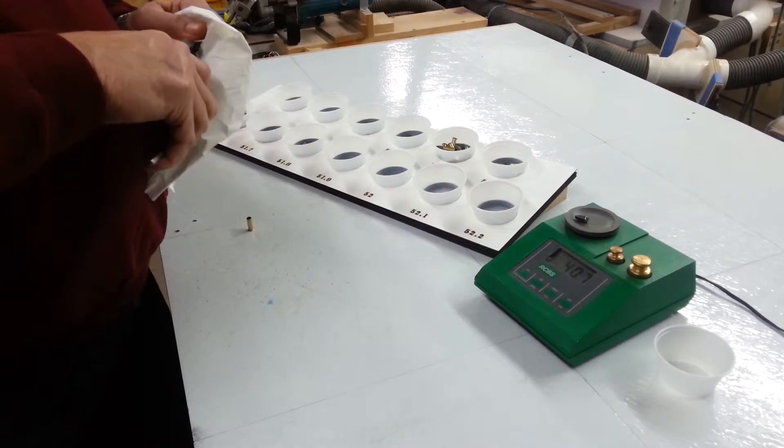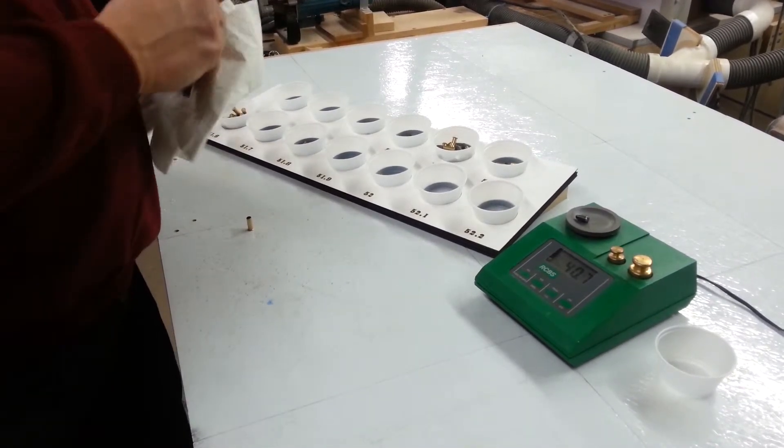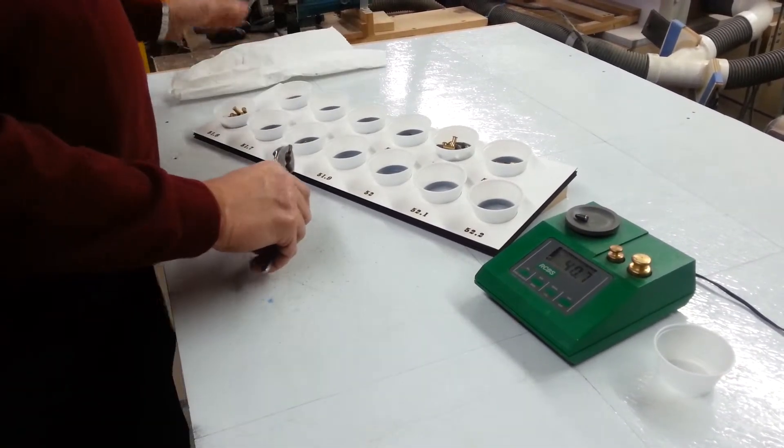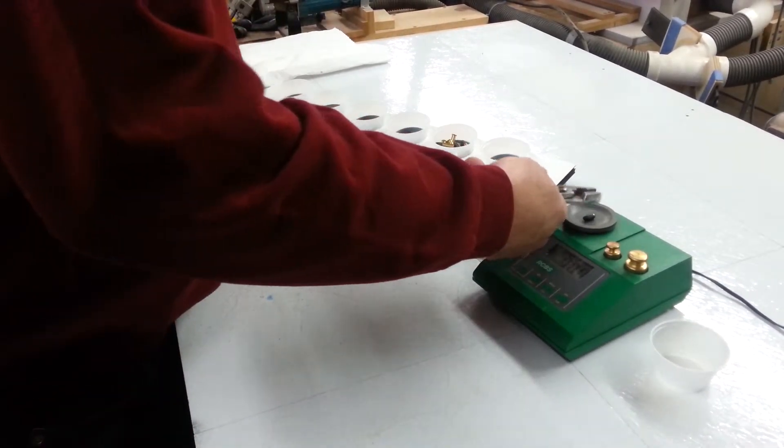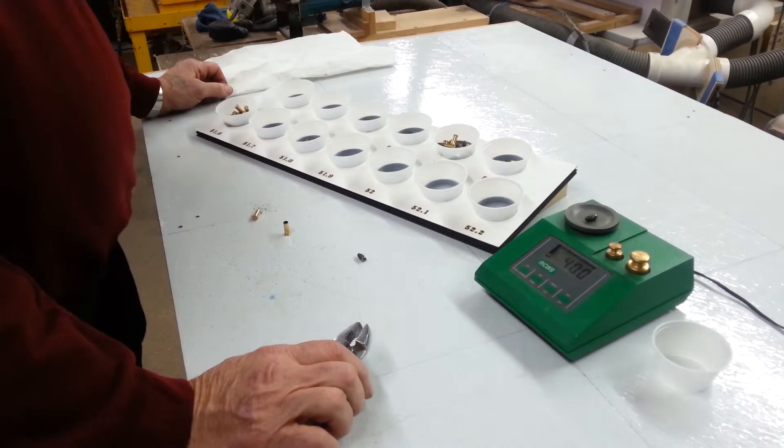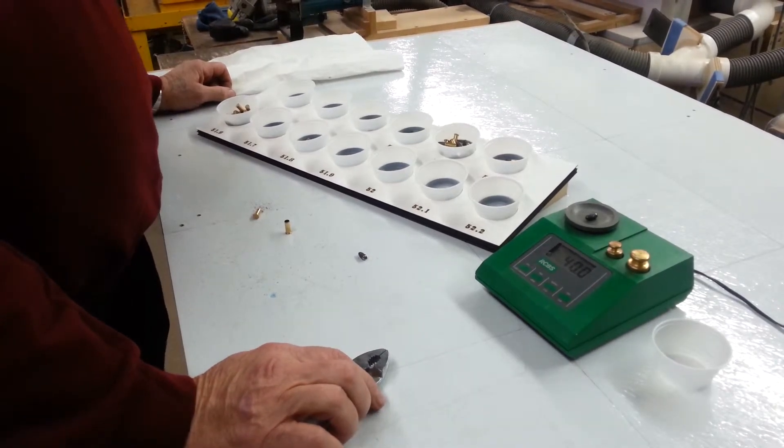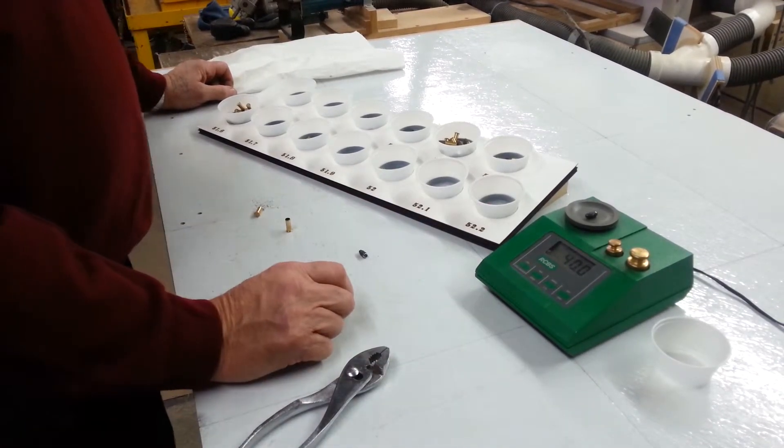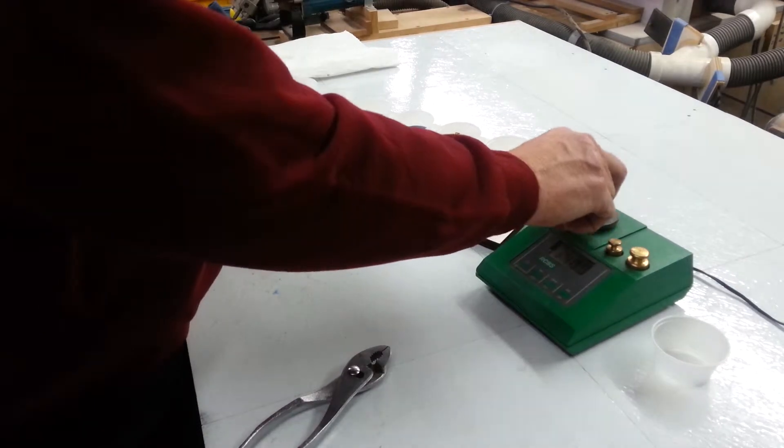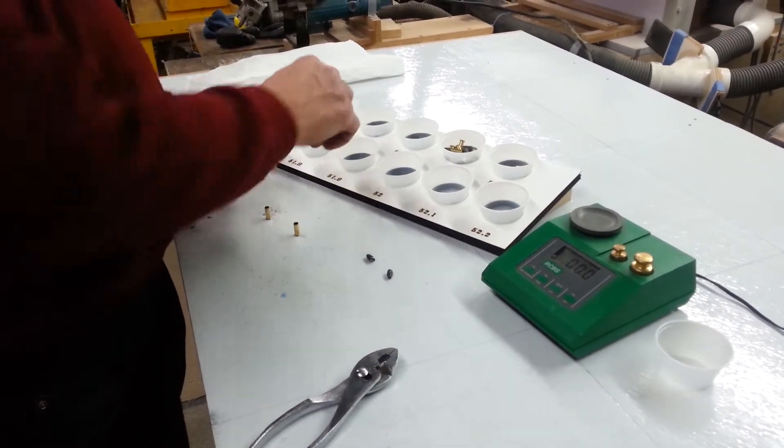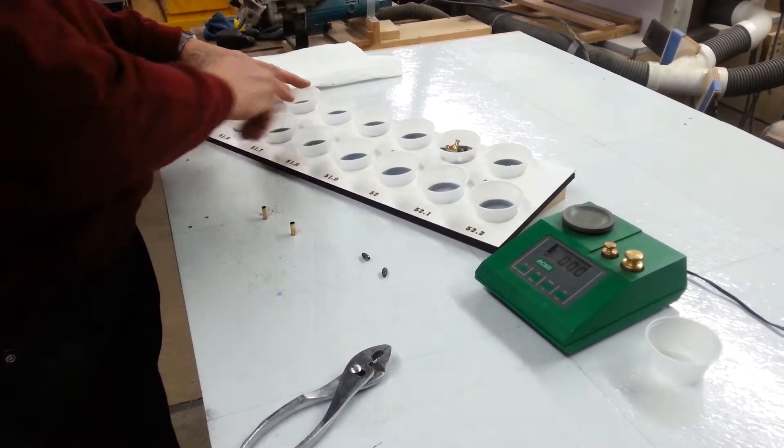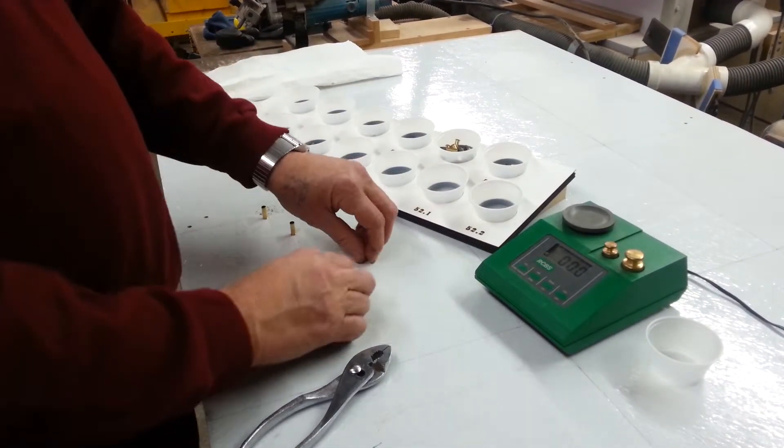I'm going to break another one open here and what you'll find is you'll have anywhere from one to one and a half grains difference in just the bullets. That one's 40 even, so that's eight tenths of a grain. As you see, that's going to take you from a 51 to 51.8, so there's a lot of variables in there.